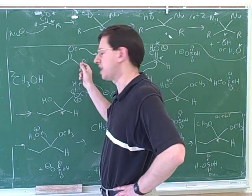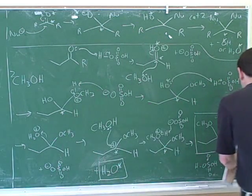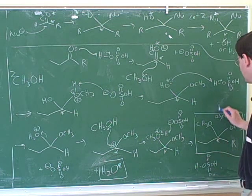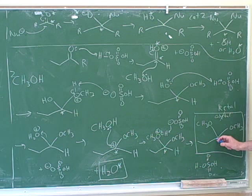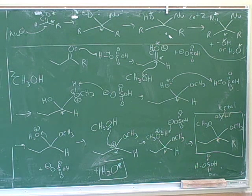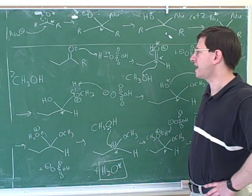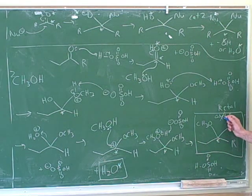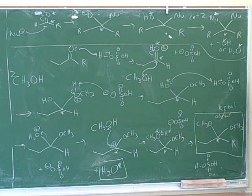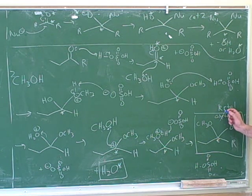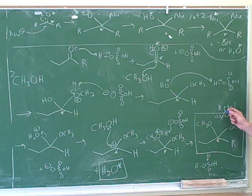If we use R for a carbon chain, then we would call this a ketone. So when we do the acid-catalyzed alcohol attack on an aldehyde, the final product is an acetal. But when we do an acid-catalyzed alcohol attack on a ketone, the final product is a ketal.